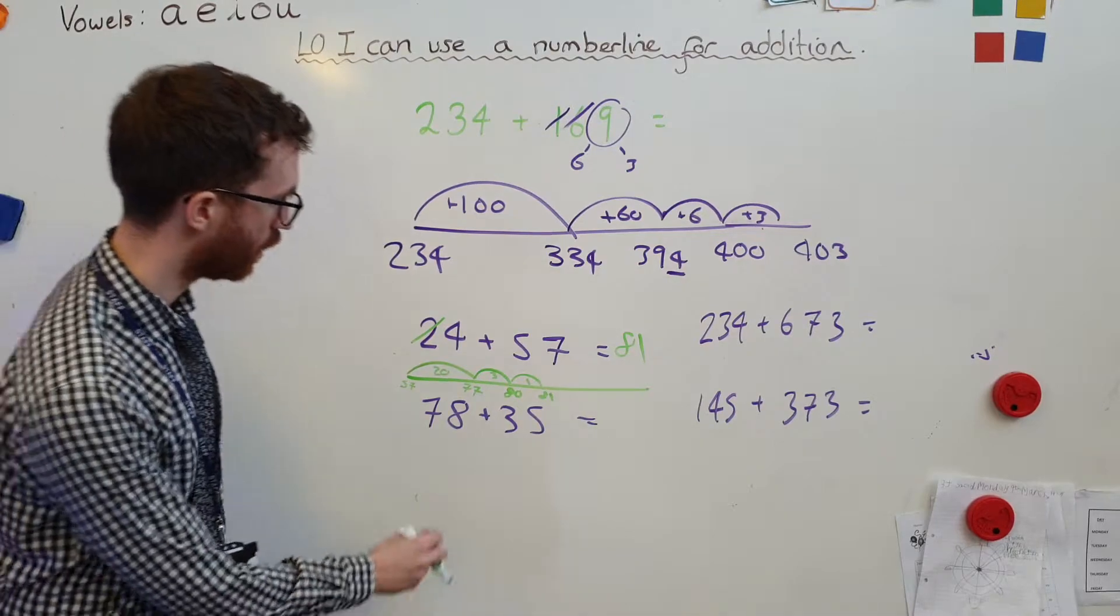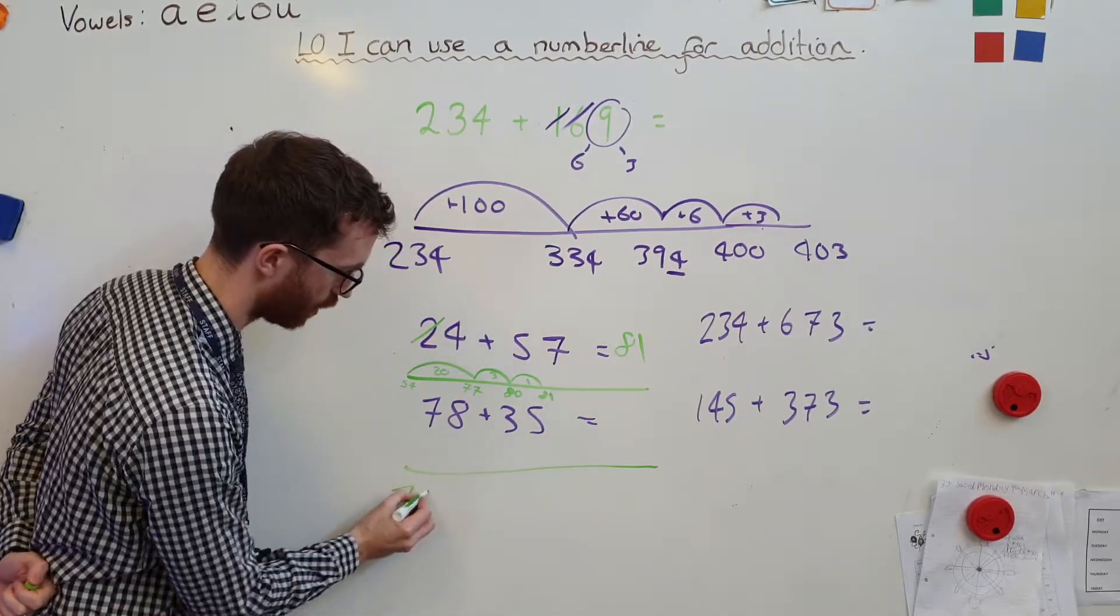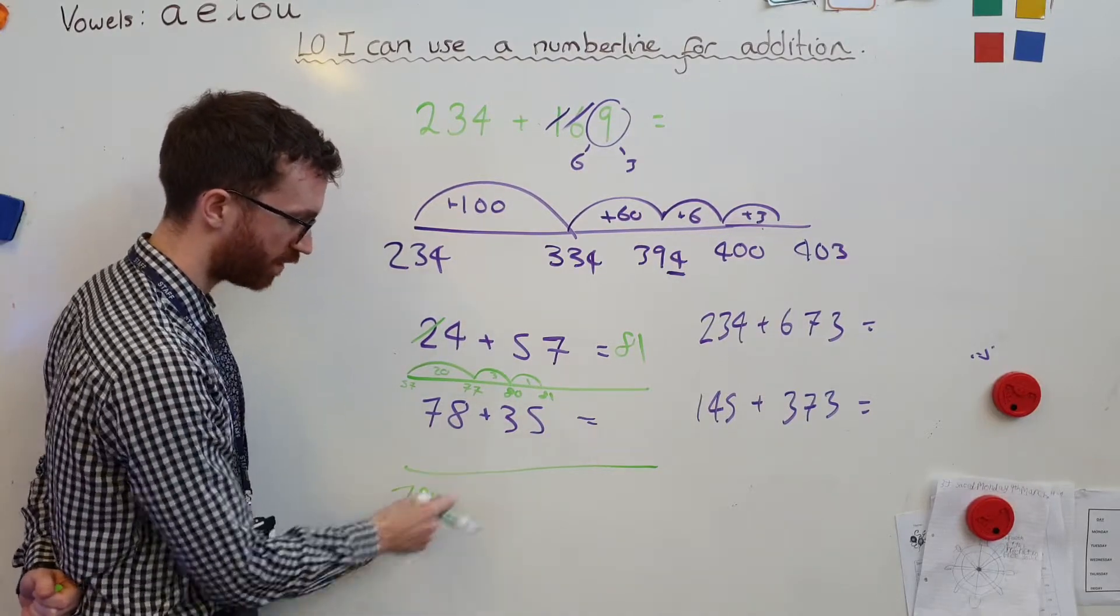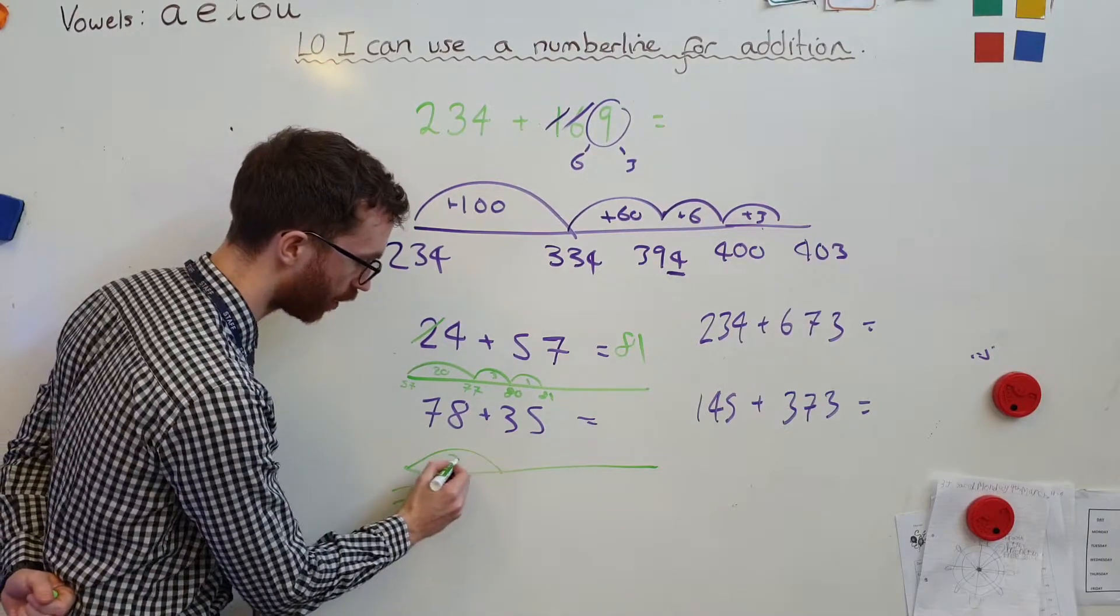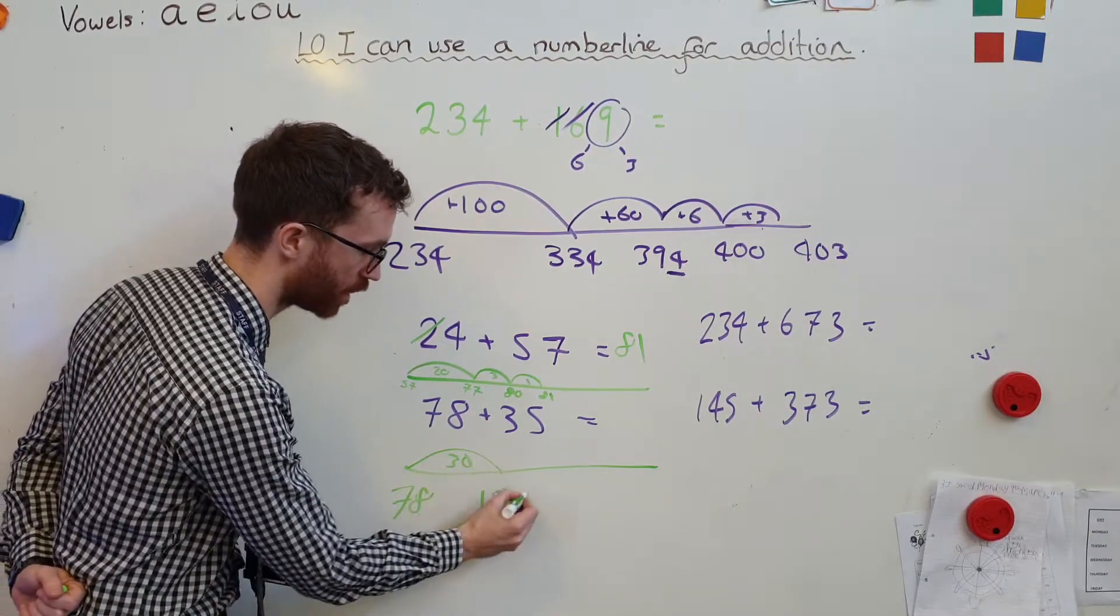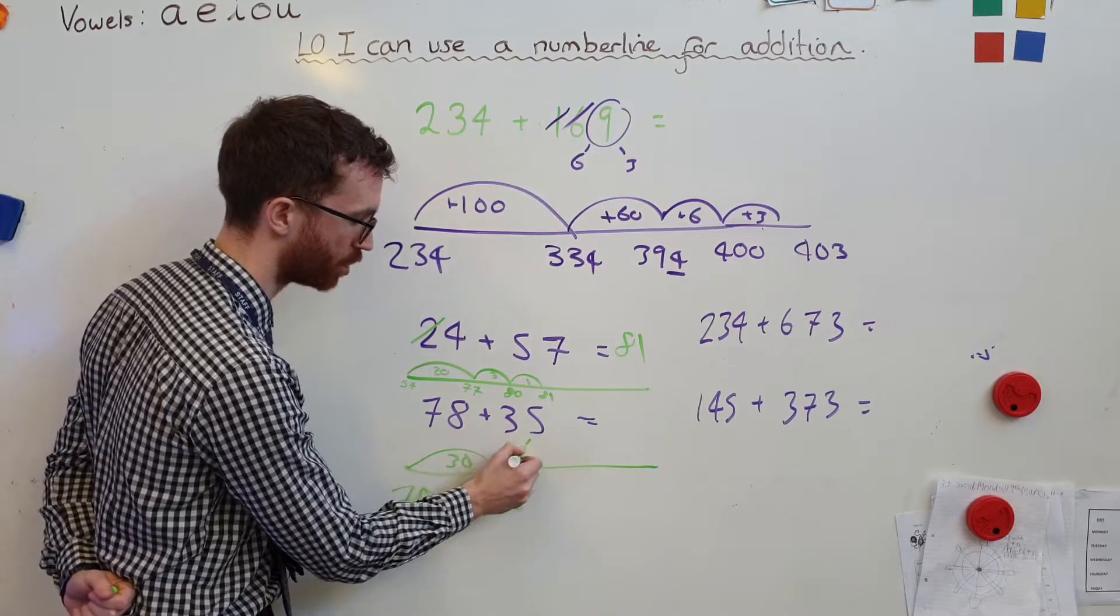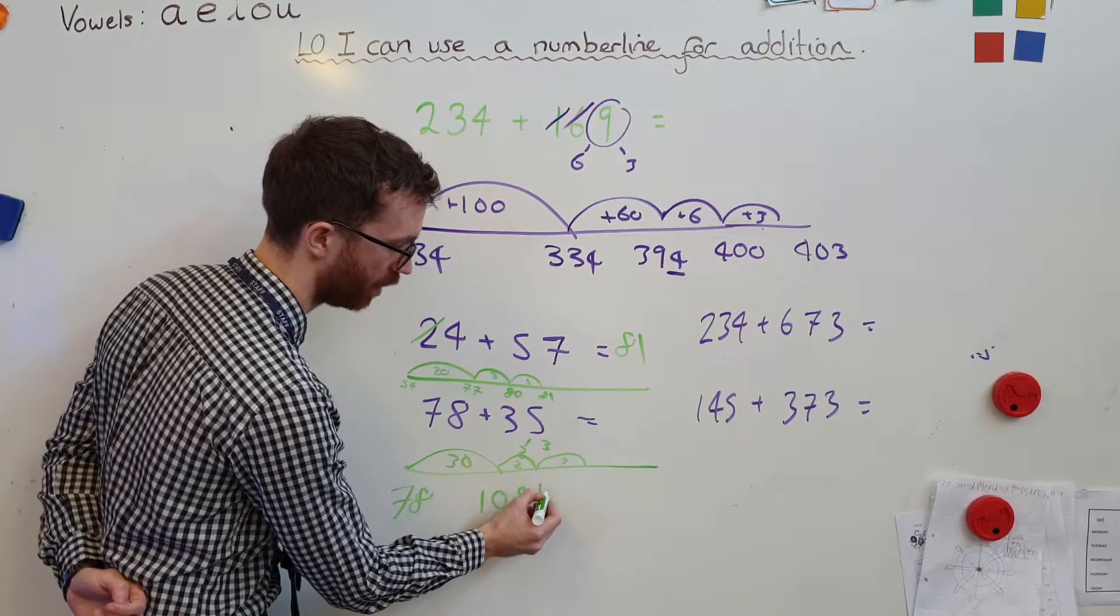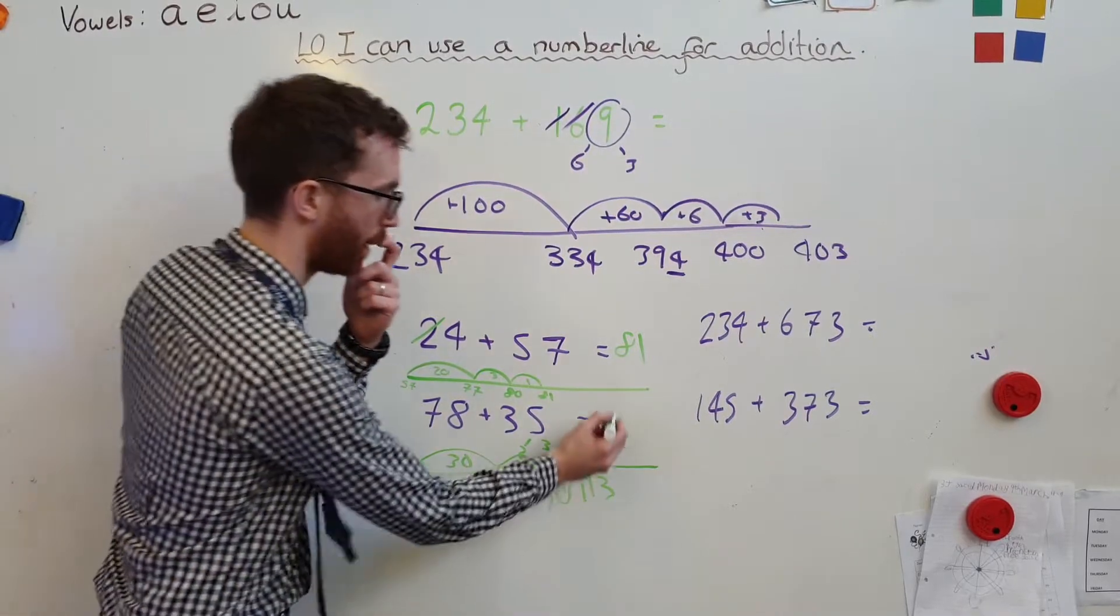Next one down here, 78 add 35. So I'm going to put the bigger number at the start, 78. I'm going to add 35. Oh, 70 and 30 are number bonds. Brilliant. So when I add the 30, I'm going to get to 108. And then when I add the 5, well, I know my number bond there is I'm going to do 2 and 3. So add 2, add 3. So 108 add 2 is 110. Add 3 is 113. Okay.